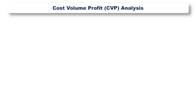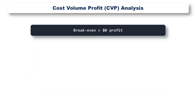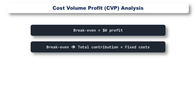Cost-volume-profit analysis is used to determine how changes in costs and volume affect a company's operating income and net income. There are a number of techniques that can be used to help us understand how changes in cost and volume impact on profits. The first thing we are going to look at is the breakeven point. As the name suggests, this tells us the volume of sales at which we make a zero profit — in other words, we breakeven. To make a zero profit, we just need to ensure that our fixed costs are covered by the contribution that we make selling our product or products.